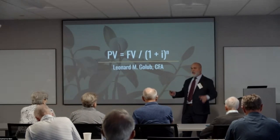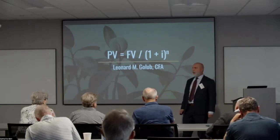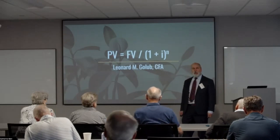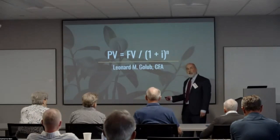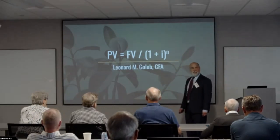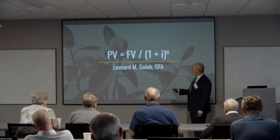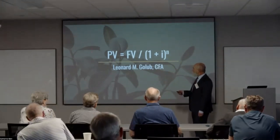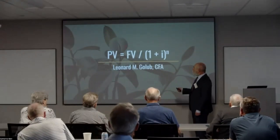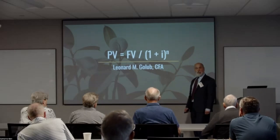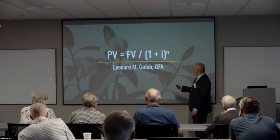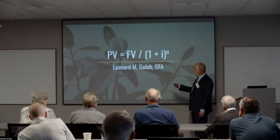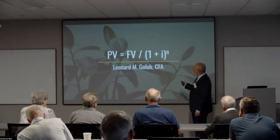There is something called the Black-Scholes option pricing model, but that's far more esoterica, and frankly it relies on this. This is the time value of money formula — it's what we work with on a daily basis. It may look scary, but it's not calculus. There's an exponent, which makes it a little scarier, but for all intents and purposes this is an algebraic equation. It tells us the present value of a future cash flow — we're reducing it by one plus an interest rate raised to the power of the number of periods.